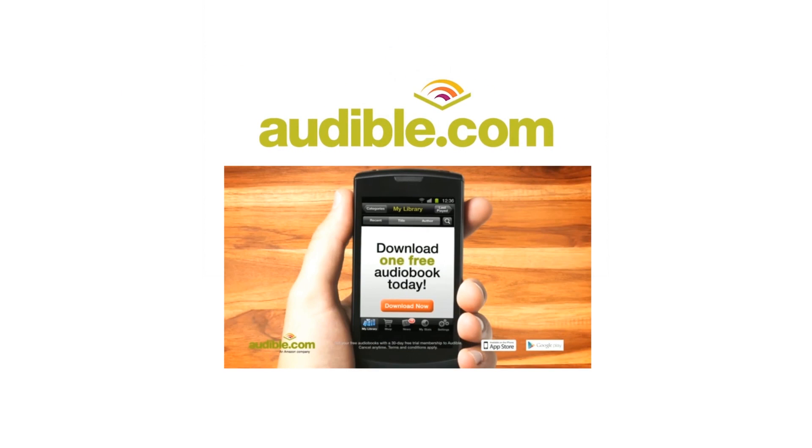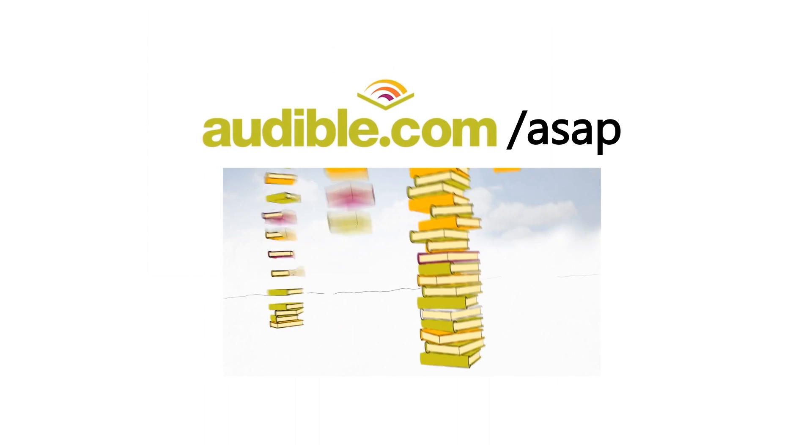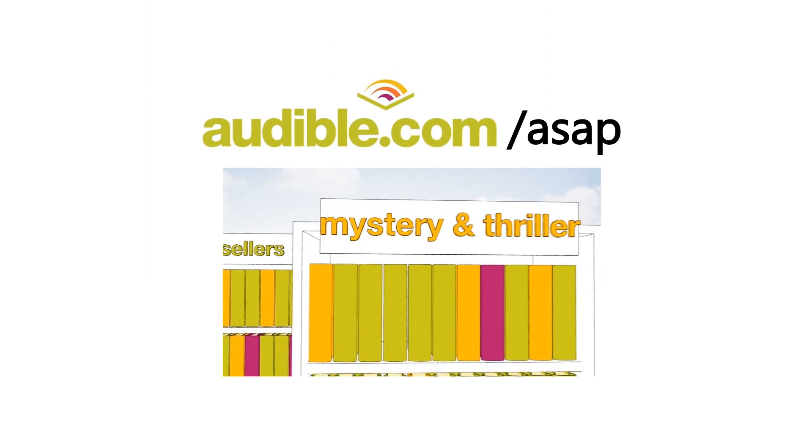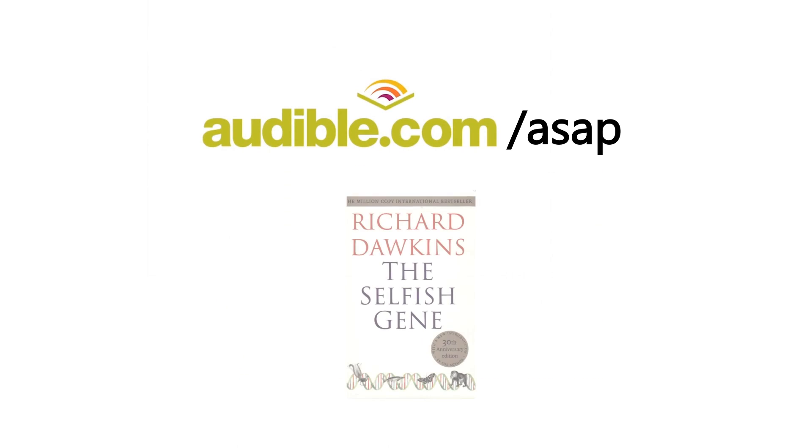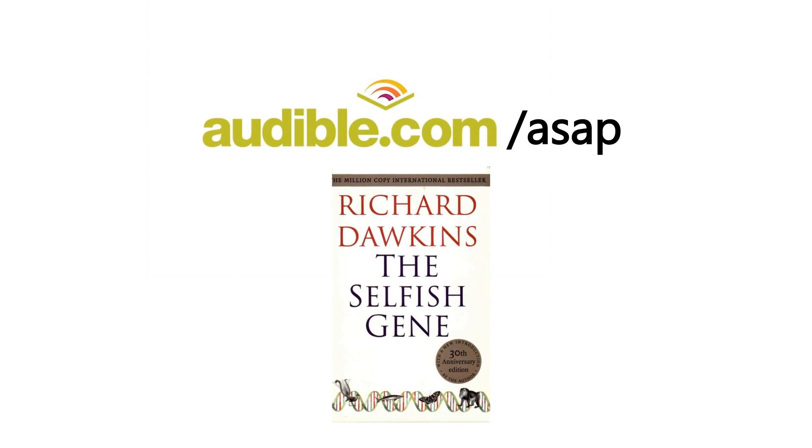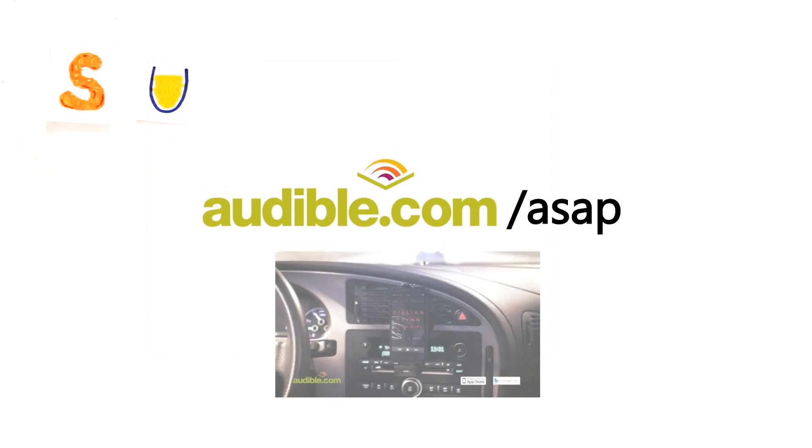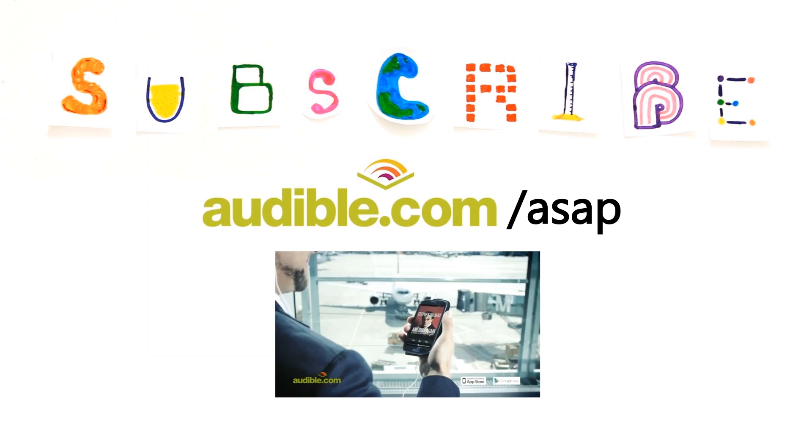Special thanks to audible.com for supporting this episode and giving you a free audiobook of your choice at audible.com/ASAP. Audible is the leading provider of audiobooks with over 150,000 downloadable titles across all types of literature. We recommend the book The Selfish Gene by Richard Dawkins, which contains some amazing insights into evolution and the biological world. You can download this audiobook or another of your choice for free at audible.com/ASAP.